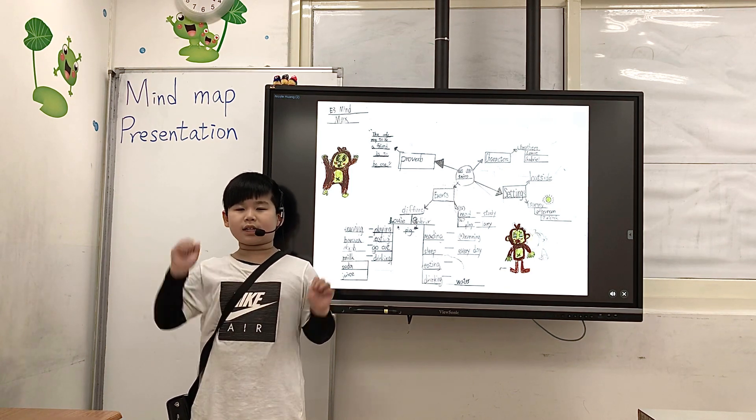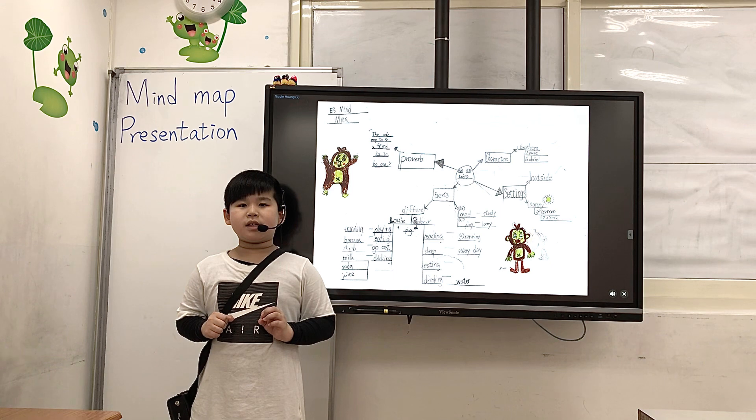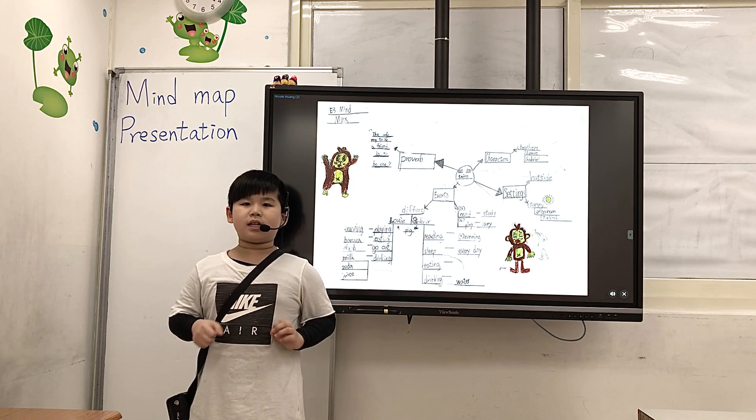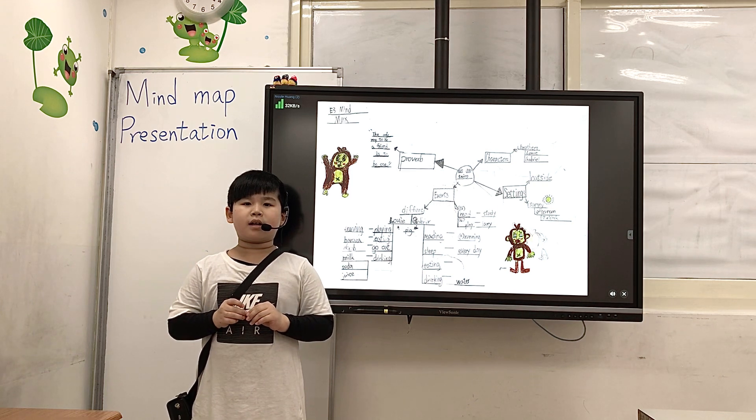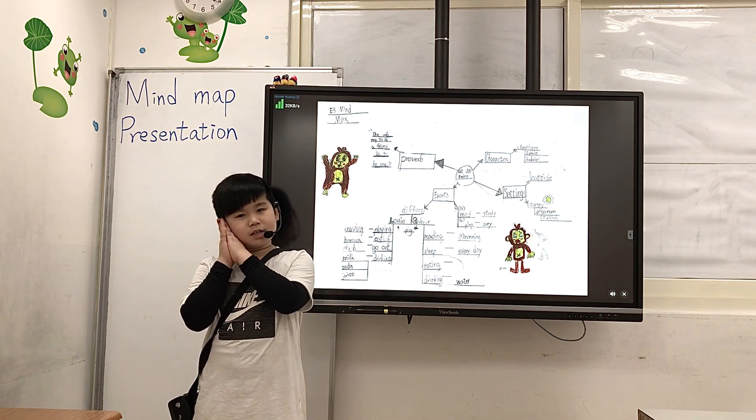They like doing different activities. Louis likes running, eating, and playing in the sand, while Gabriel likes reading and sleeping.